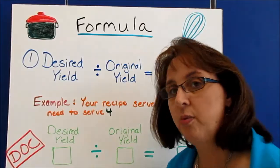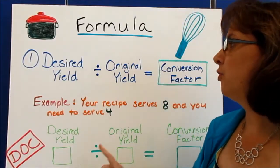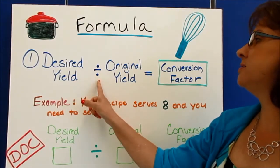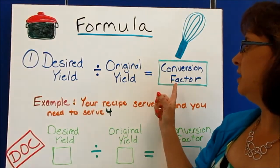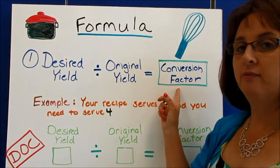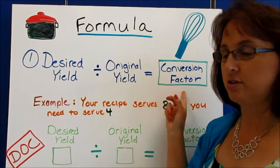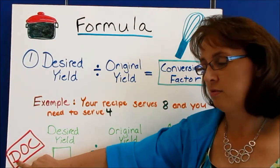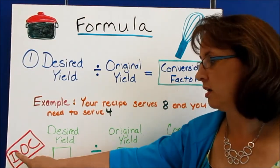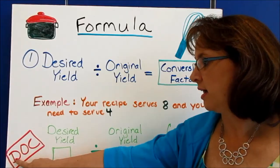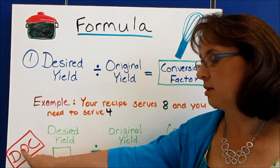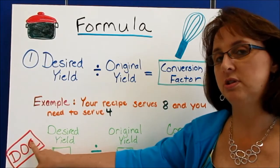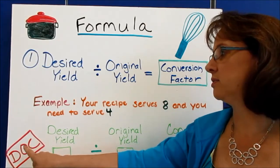We use the same formula: desired yield divided by original yield equals a conversion factor. If you can't remember that, remember DOC — desired yield, original yield, equals conversion factor.